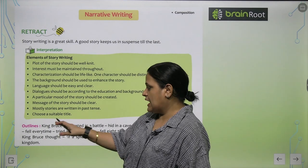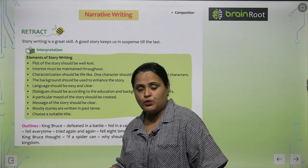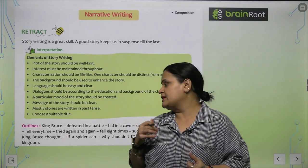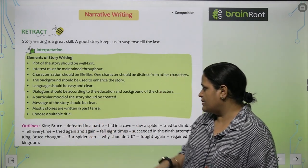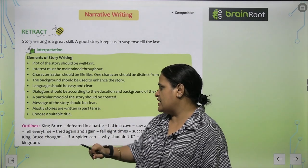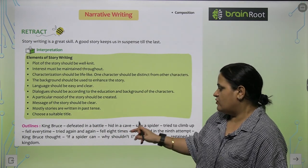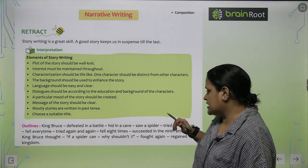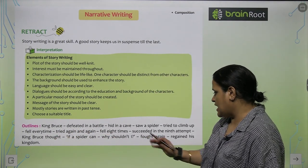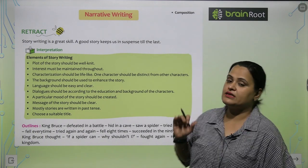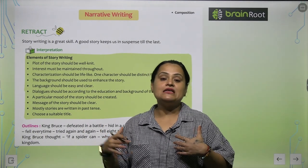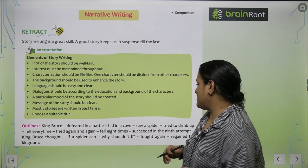Now, here is a story outline. An outline means some hints are given from which you have to build a complete story. The hints are: King Bruce defeated in a battle, hid in a cave, saw a spider, tried to climb up, fell every time, tried again and again, fell eight times, succeeded in the ninth attempt. King Bruce thought — if a spider can, why shouldn't I fight again? He regained his kingdom. I hope from these hints you can tell which story this is.